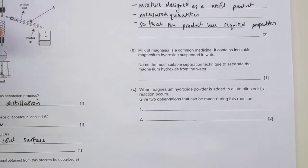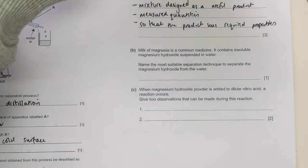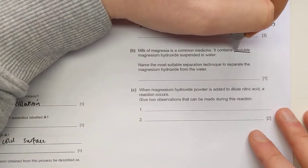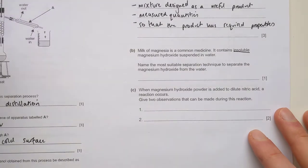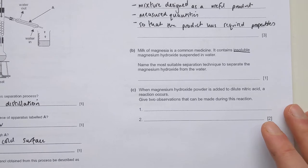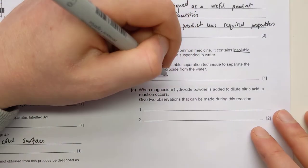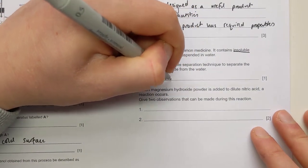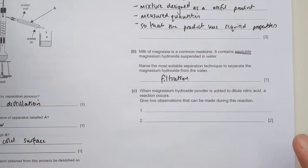Part B says milk of magnesia is a common medicine. It contains insoluble magnesium hydroxide suspended in water. Name the most suitable separation technique to separate the magnesium hydroxide from the water. So again, by reading the question, there's a big clue here. It tells you that magnesium hydroxide is insoluble in water. So if we're trying to get it from the water, if you imagine a more easy example of that, something that's insoluble in water would be sand. If I give you sand and water and told you to get the sand back, you'd probably be reaching for the filter paper. And that's true here.